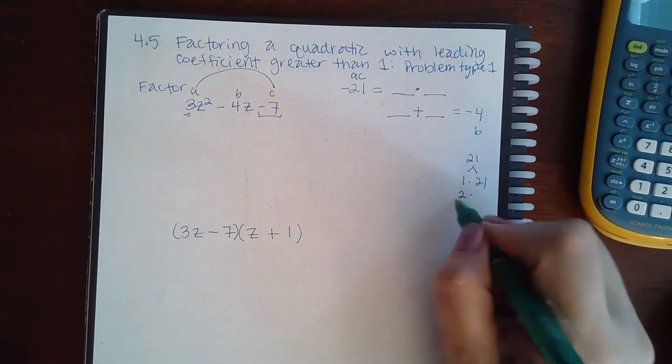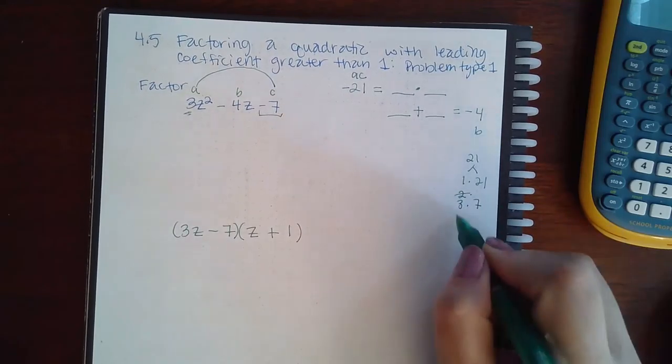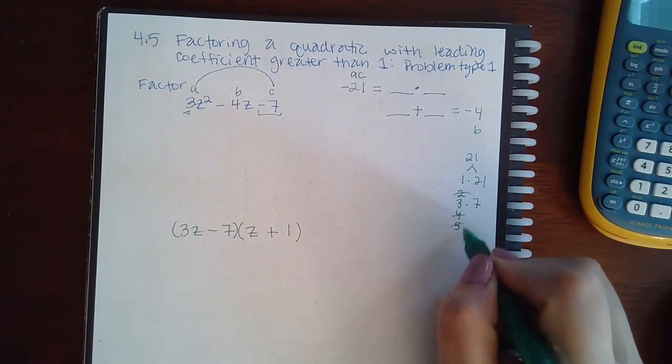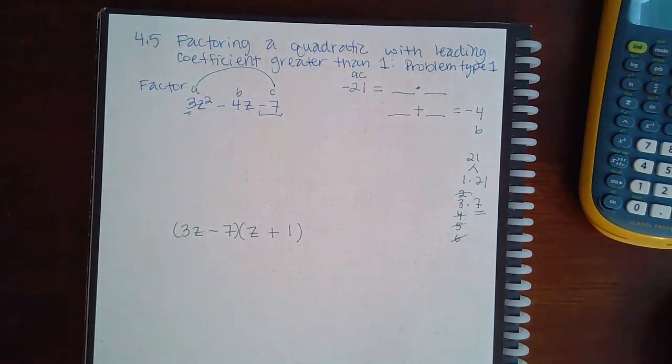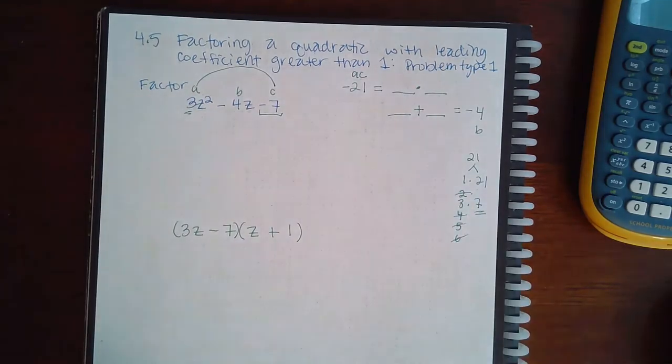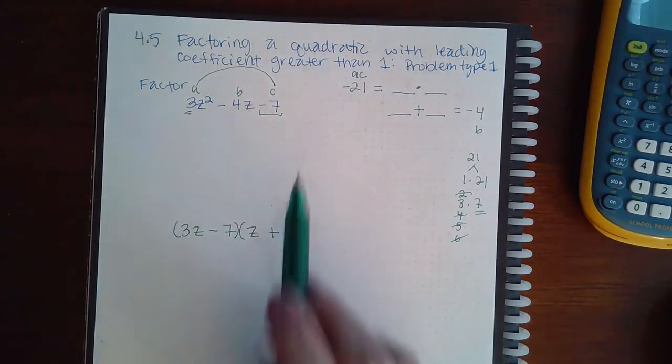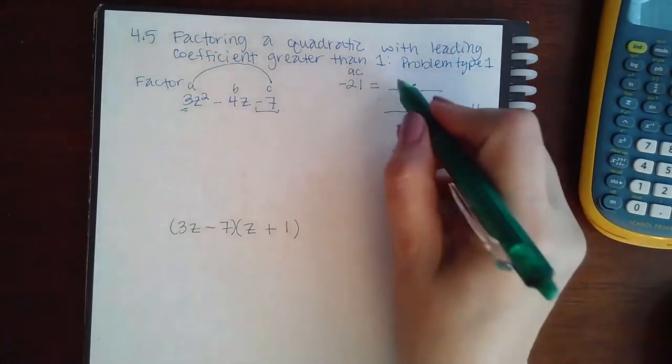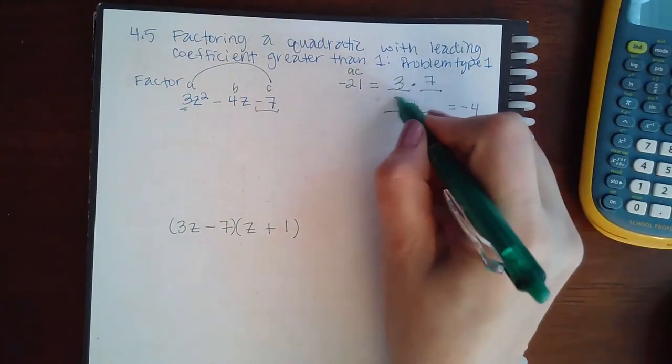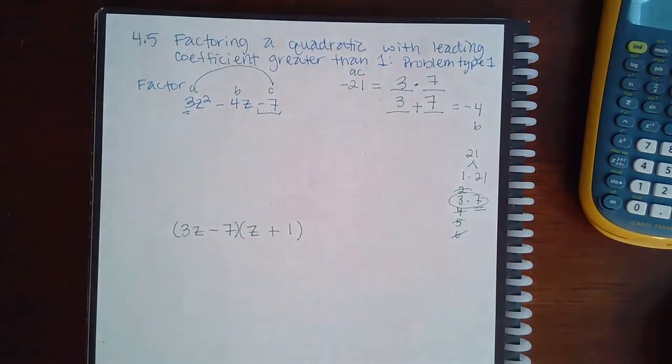Then when you go over here to do the list of 21, it's 1 times 21, 3 times 7. Two, four, five, and six won't go in evenly, and seven is already on the list. So that's it. I only have two groups. Which one of these will subtract to give 4? That's going to be 3 and 7.